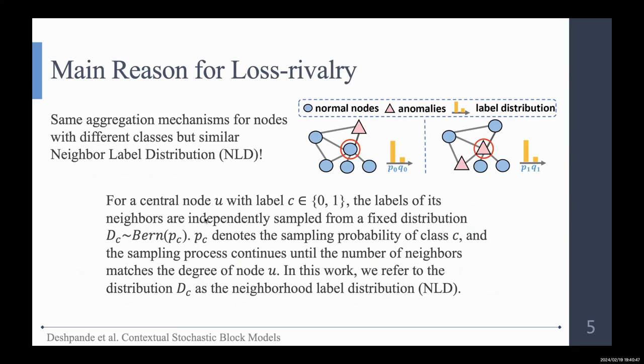What is neighborhood label distribution? We count the normal nodes and the number of anomalies around the center node. And here we have the neighborhood label distribution for the center nodes. If you are interested in this part, please read our paper.